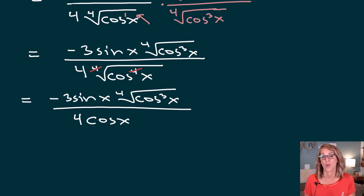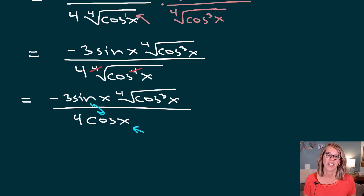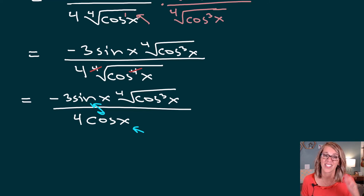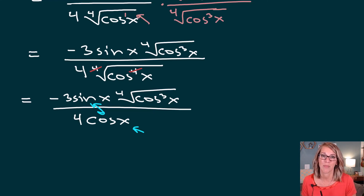I said one form of the answer because there are so many things you can do with trig functions. You could write the cosine as a secant up in your numerator, or change the sine over cosine into a tangent. This is just one form, but it is a rationalized form of our answer. There's so much more algebra that goes into these than the actual calculus itself. Take a look at the video I've got here next — it's going to help you out so much. Good luck, and thanks so much for watching.